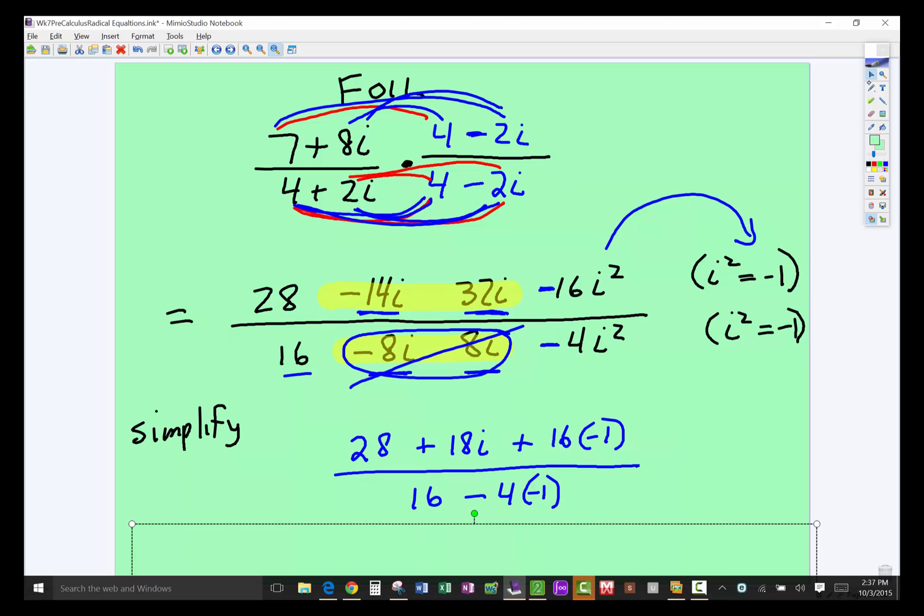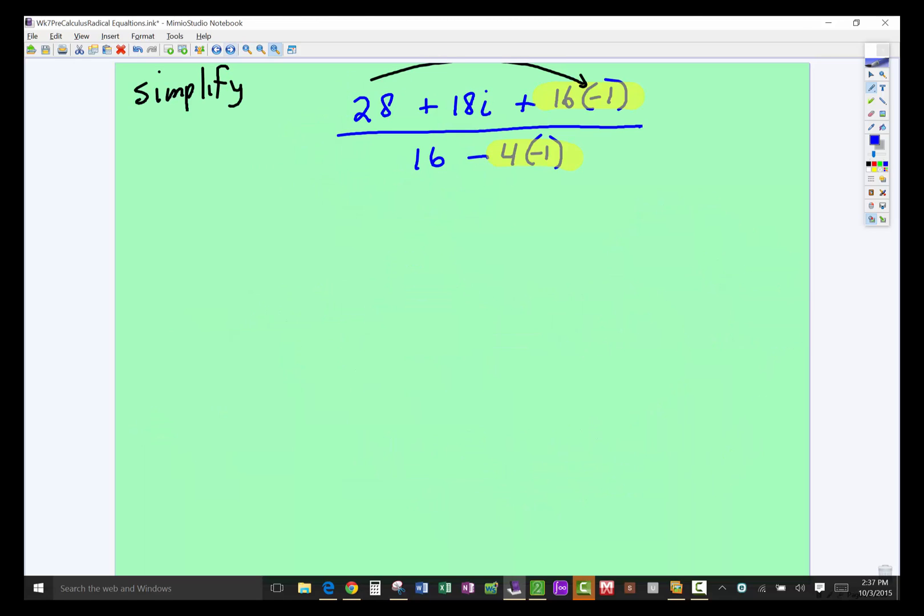And that's what I'm going to do now. So we simplify these two things. Negative 14i plus 32i is positive 18i. And i squared is negative 1. Again, i squared is negative 1. So that brings us to, this gives us negative 16 times negative 1 is 16. 28 subtract 16 is 12.